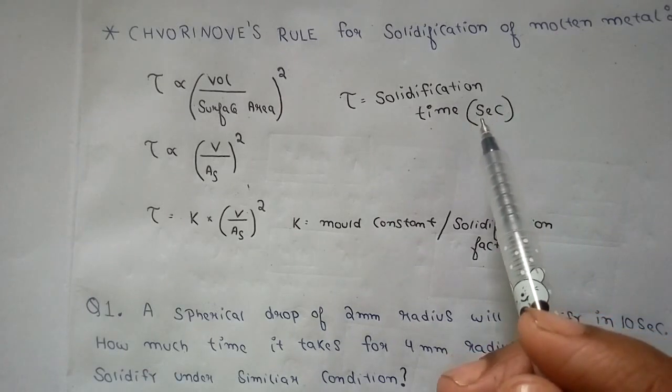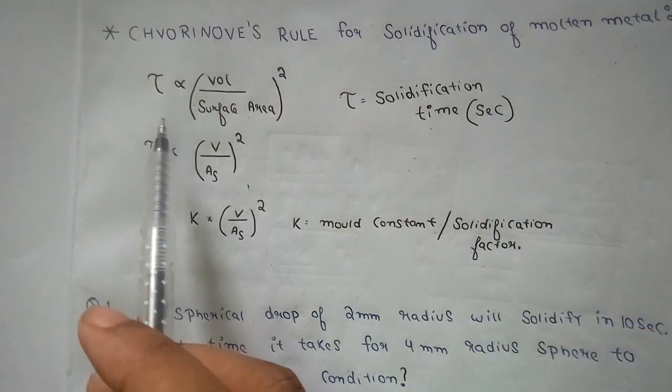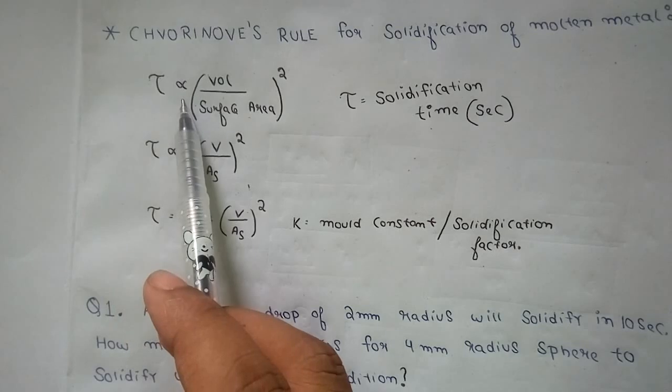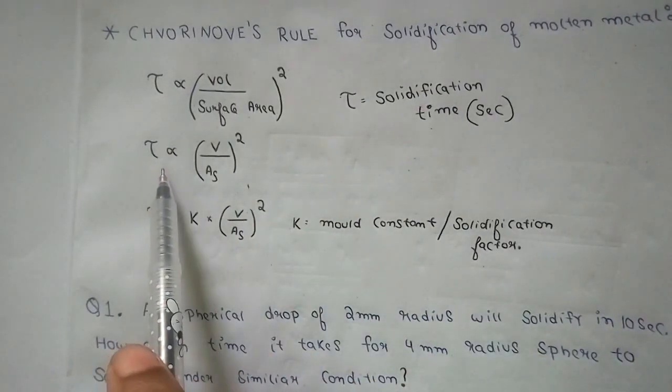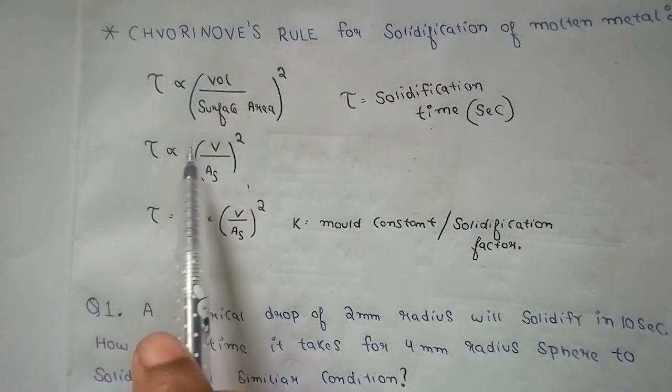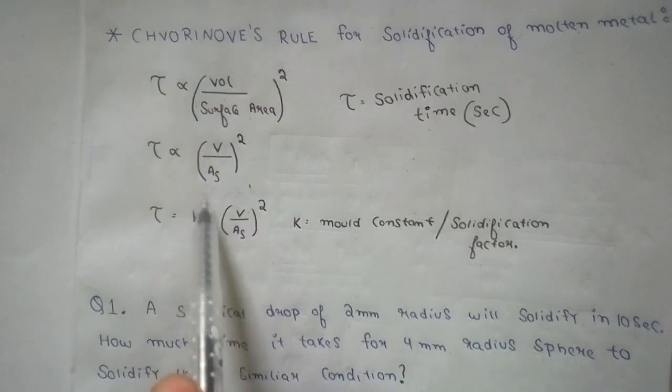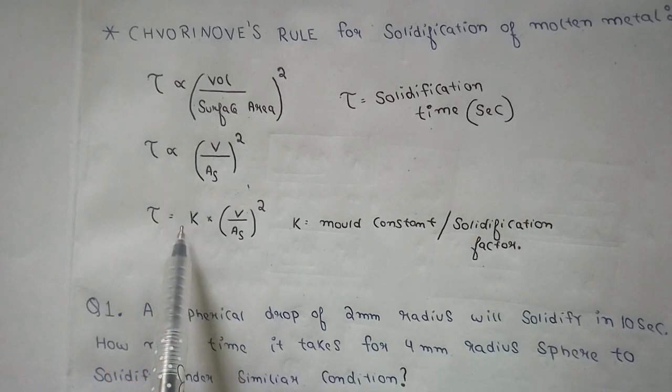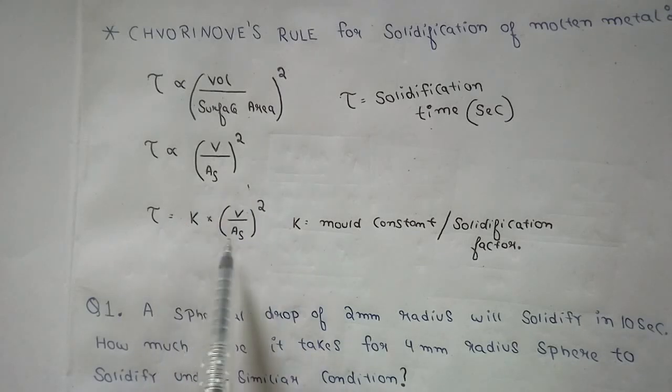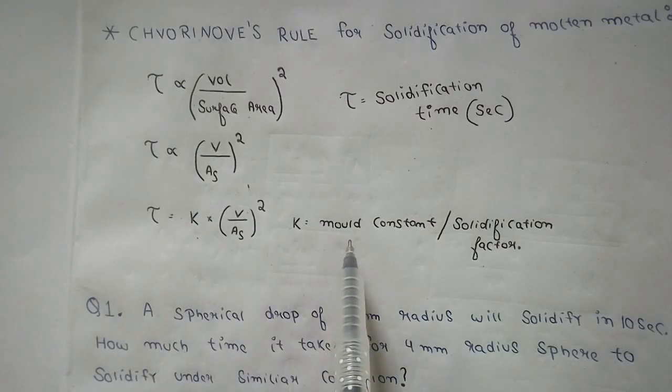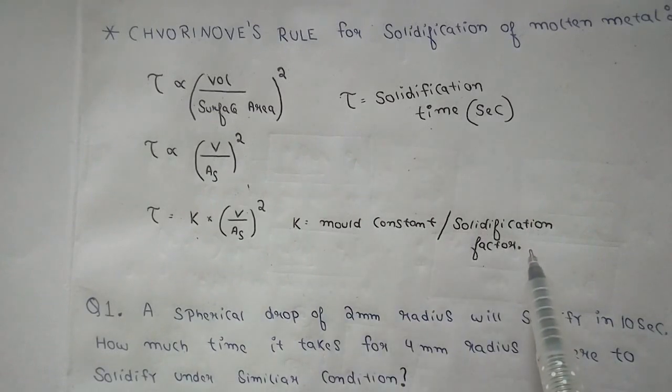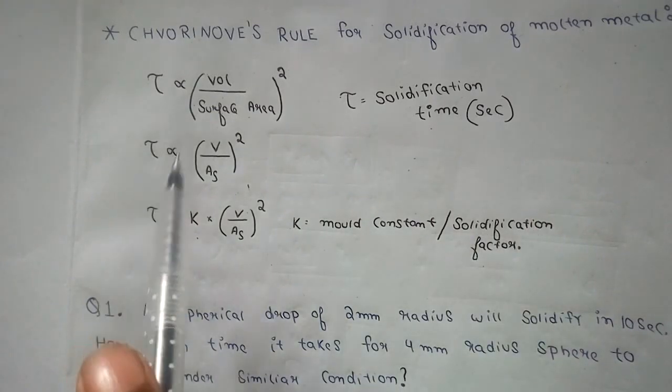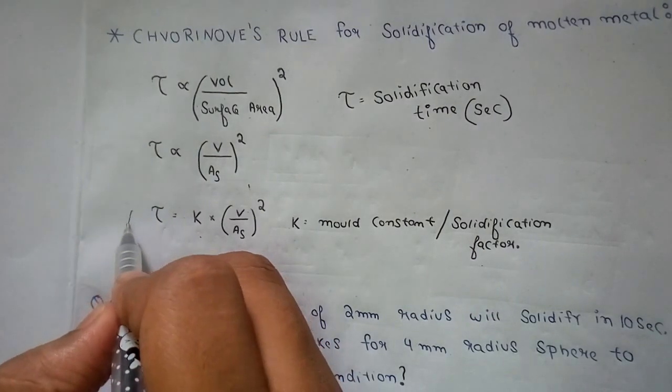Tau is directly proportional to V by As whole square. To remove this proportionality sign, we add a constant K. So tau equals K times (V/As) squared. This constant K is named the mold constant or solidification factor. This is a very important formula we can use to directly solve any questions related to solidification time.